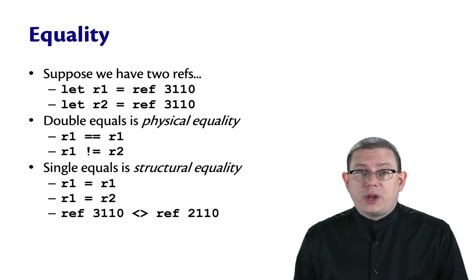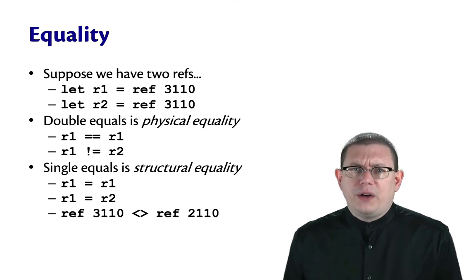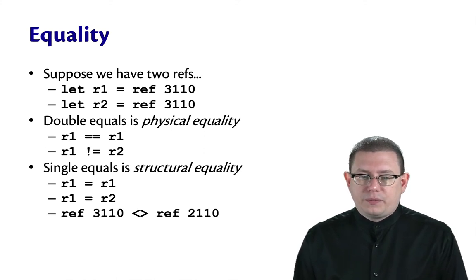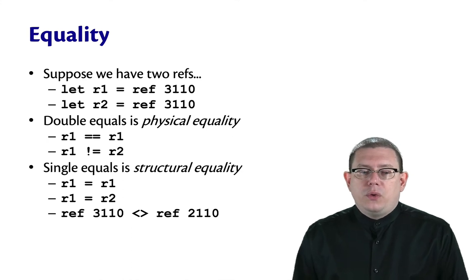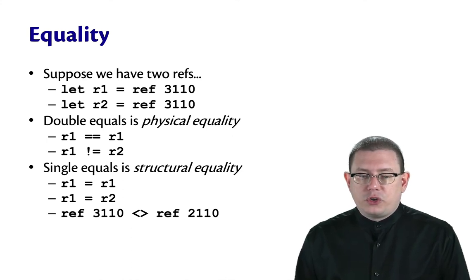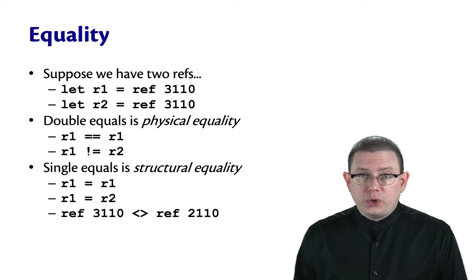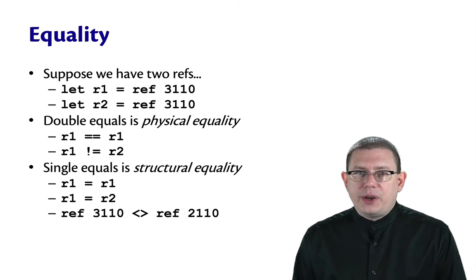Single equals, which is what I've been encouraging you to use so far this semester, is structural equality. Think of that as looking at the contents, the structure of a location, not the location itself. So R1 equals R1. R1 also equals R2 because they currently contain the same contents, 3110. But, ref 3110 is not structurally equal to ref 2110 because those two locations will contain different contents. The negation of structural equality is written less than greater than, this kind of diamond operator to indicate inequality.